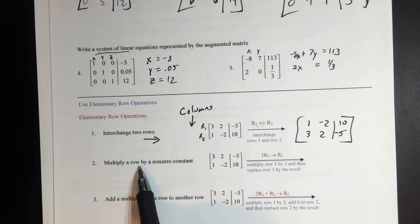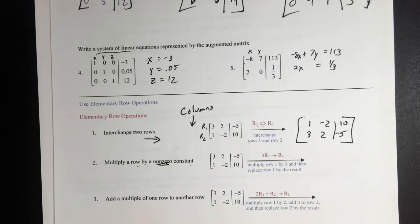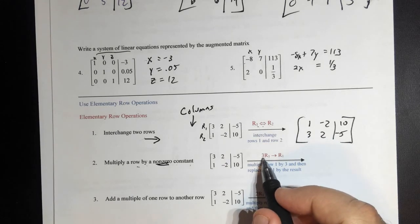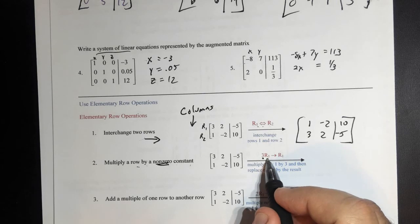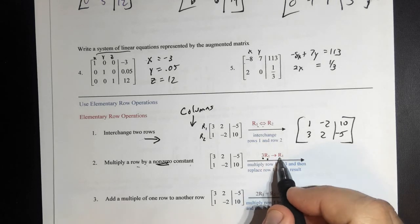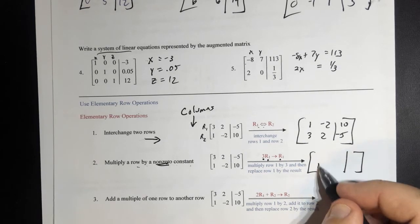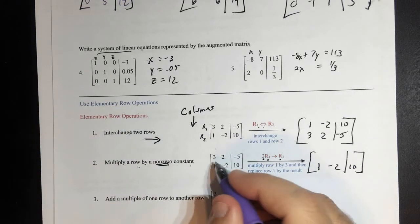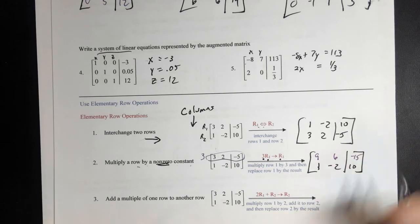I can multiply a row by a non-zero constant — it cannot be a 0. So in this one, what this is saying is we're going to multiply 3 times row 1, and we're going to just keep it at row 1. So the only thing that's going to change is row 1. Row 2 stays the same. Row 1, everything here gets multiplied by 3: 9, 6, negative 15.